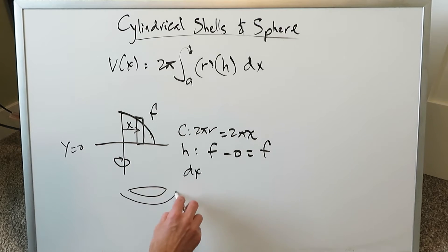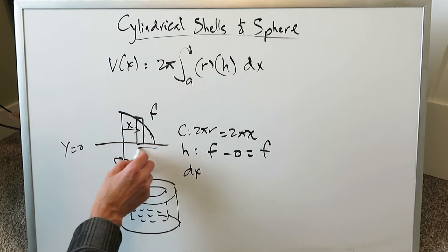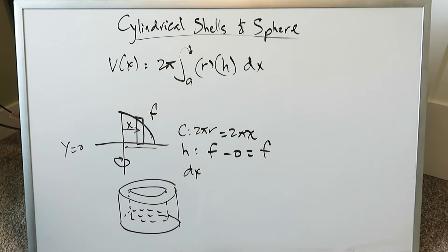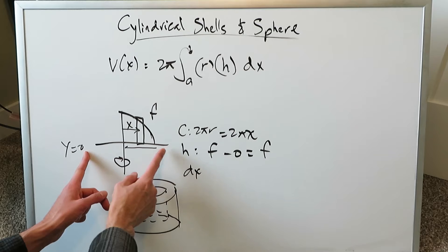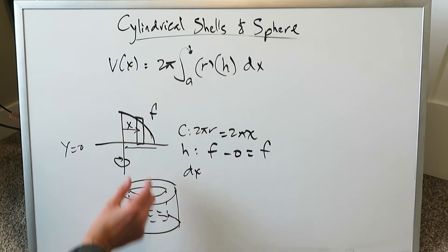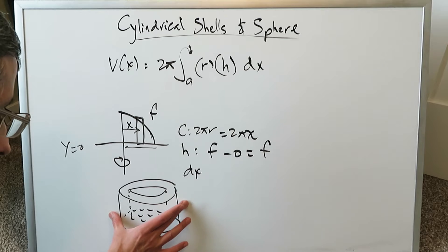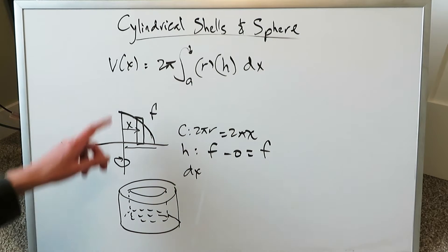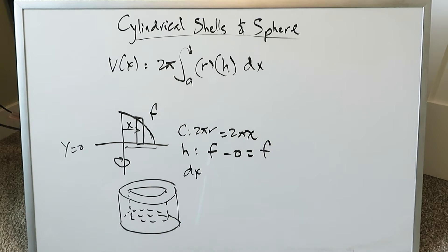When this Riemann rectangle rotates around your line of axis, it forms a cylindrical shell — it would look something like a three-dimensional shell. From the outside going inwards, these Riemann rectangles have a certain height, like a bunch of stacking cups. You cumulatively add up all the areas of these cylindrical shells, as you would in a volume integration, integrating the area over your interval to get your volume.